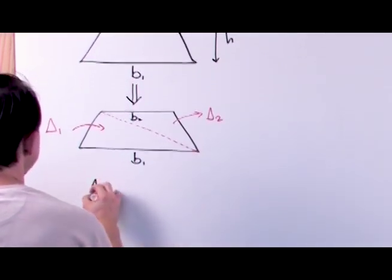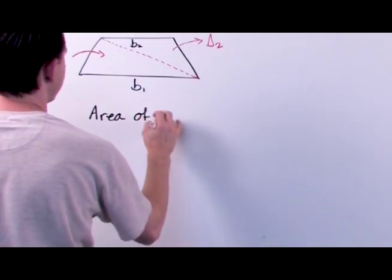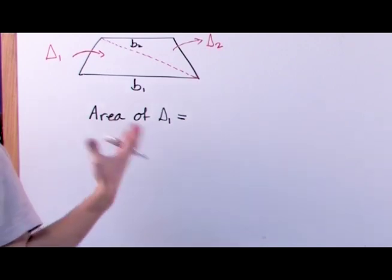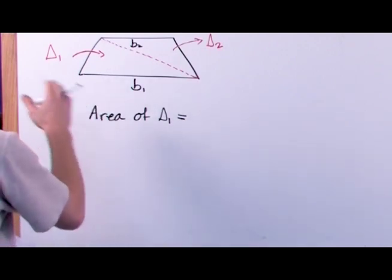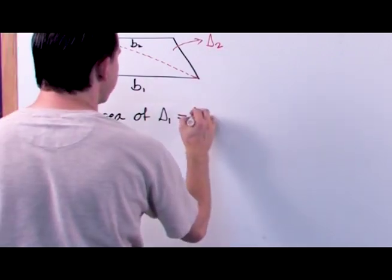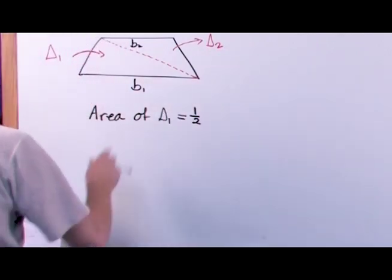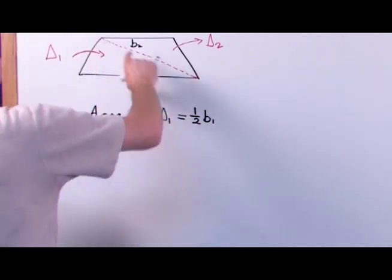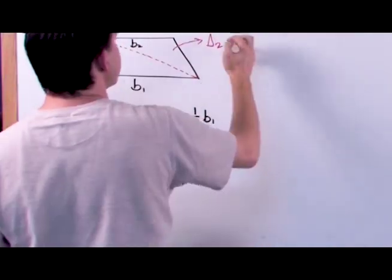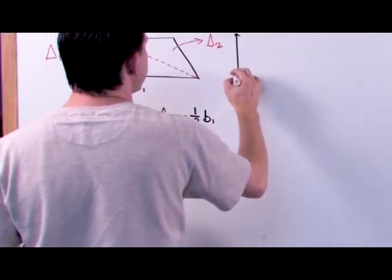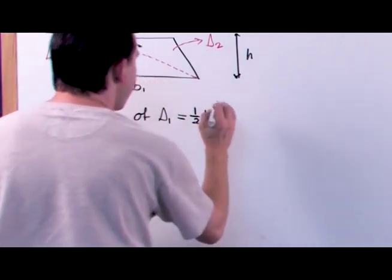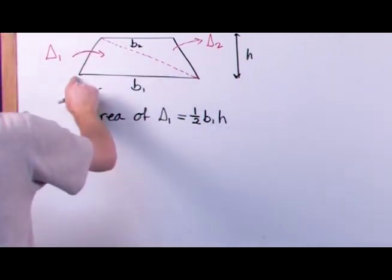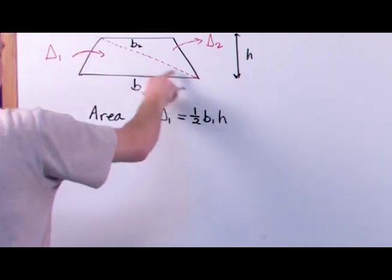What is the area of triangle one? We learned that the area of a triangle is one half times base times height. So the area of triangle one is one half times B1 times H, because B1 is the base of that triangle and the height of the triangle is the same as the height of the trapezoid.